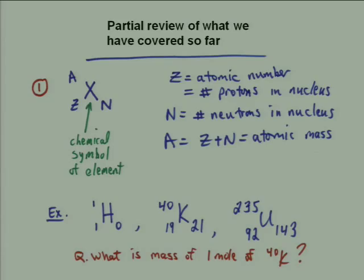Nuclei are described by their number of protons and neutrons. In all nuclear reactions, the number of neutrons and protons is conserved — whatever you started with remains the same at the end; we don't create or destroy neutrons or protons. We do sometimes change neutrons into protons or vice versa via beta decay. You should understand the basics of that and the mass parabolas. For a quick example: the mass of one mole of K-40 is 40 grams — no calculation needed.